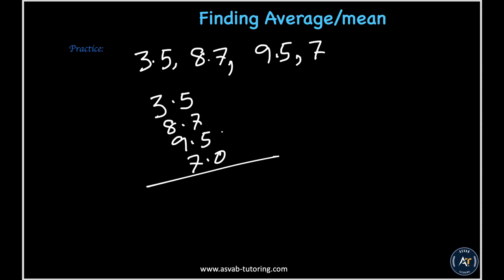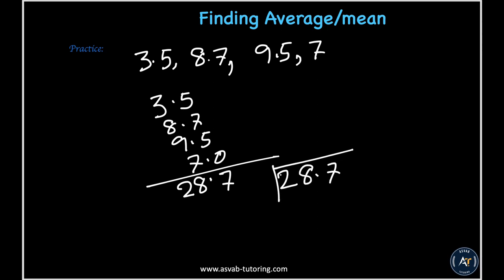Adding the decimals: 7 plus 5 is 12, plus 5 is 17, carry 1. Continuing: 7 plus 1 is 8, 8 plus 9 is 17, 17 plus 8 is 25, 25 plus 3 is 28, giving 28.7. Now divide 28.7 by 4. 7 times 4 is 28, move the decimal, bring down the 7.